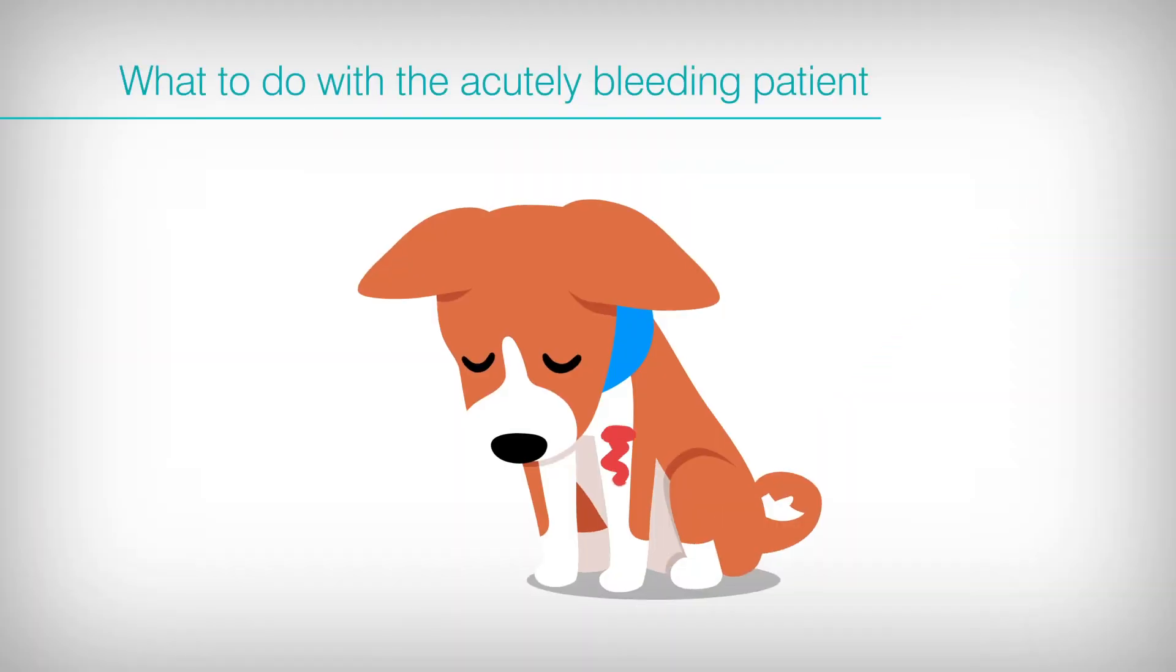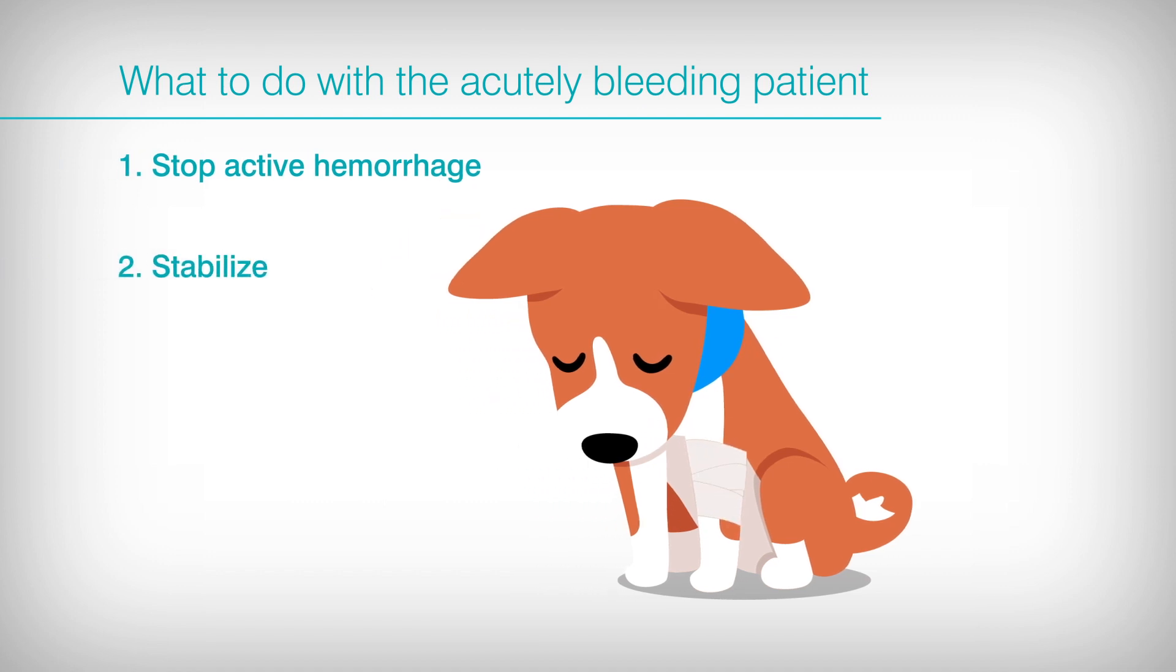So with this acutely bleeding patient, the steps I would take as a criticalist would be the same that all veterinarians would take, stop active hemorrhage if you can, stabilize by getting intravenous access and providing fluid support, blood pressure support, giving blood products, transfusions if necessary, and then getting this minimum database. And that's the initial assessment.